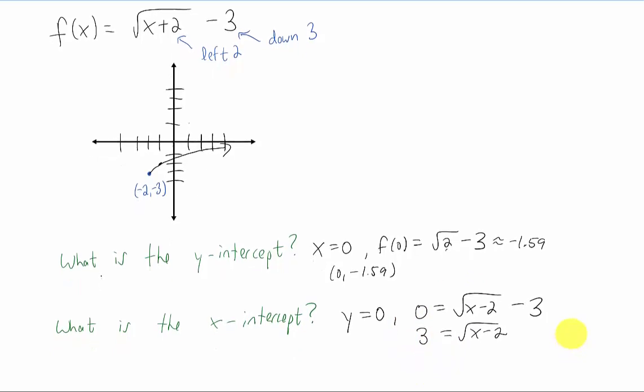Now that we have the radical by itself, we can square both sides of the equation. That cancels the square root on the right and leaves us with a 9 on the left. And we can add 2 to both sides in this case to solve for x.